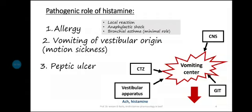Impulses can come from the GIT, CNS, CTZ centers, and the vestibular apparatus. The vestibular apparatus provides stimulation through histamine and acetylcholine (muscarinic) receptors.